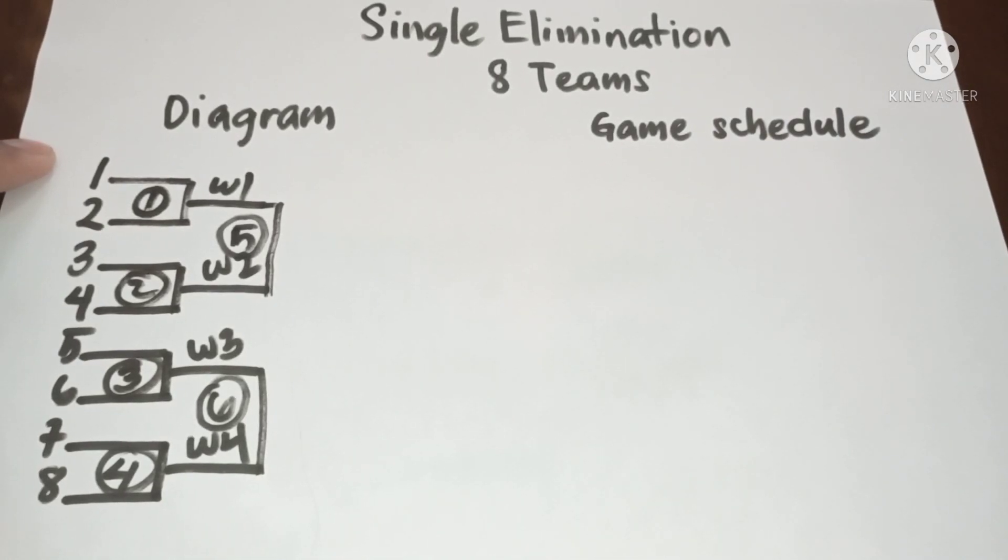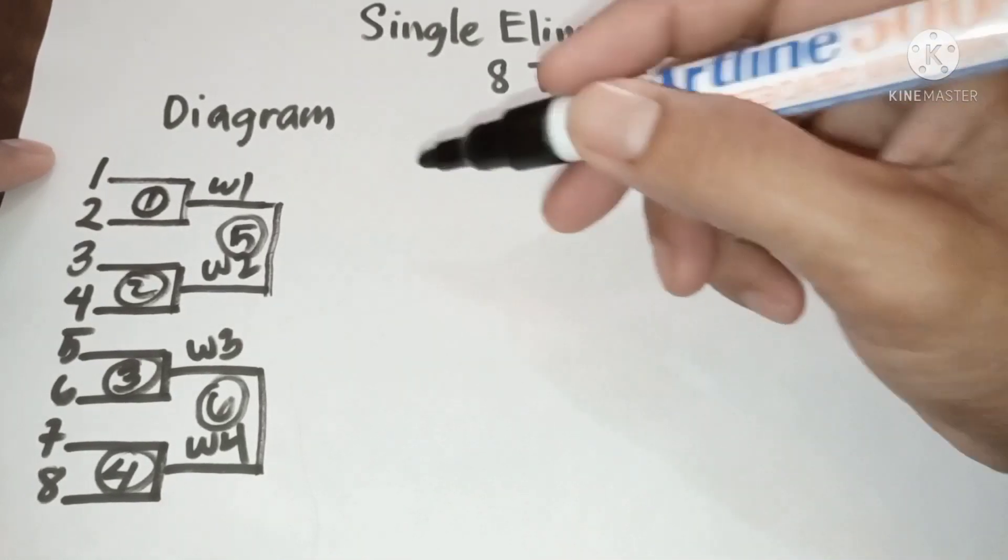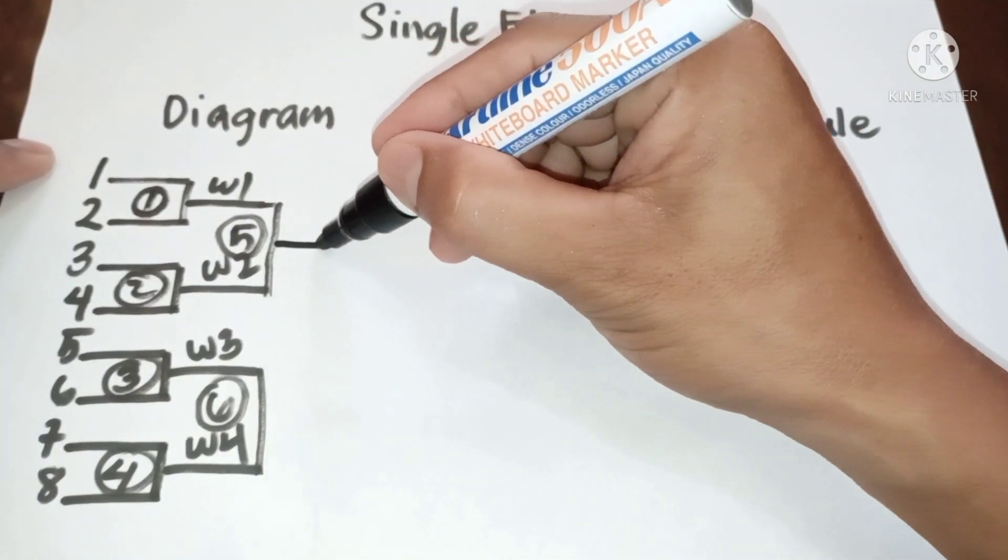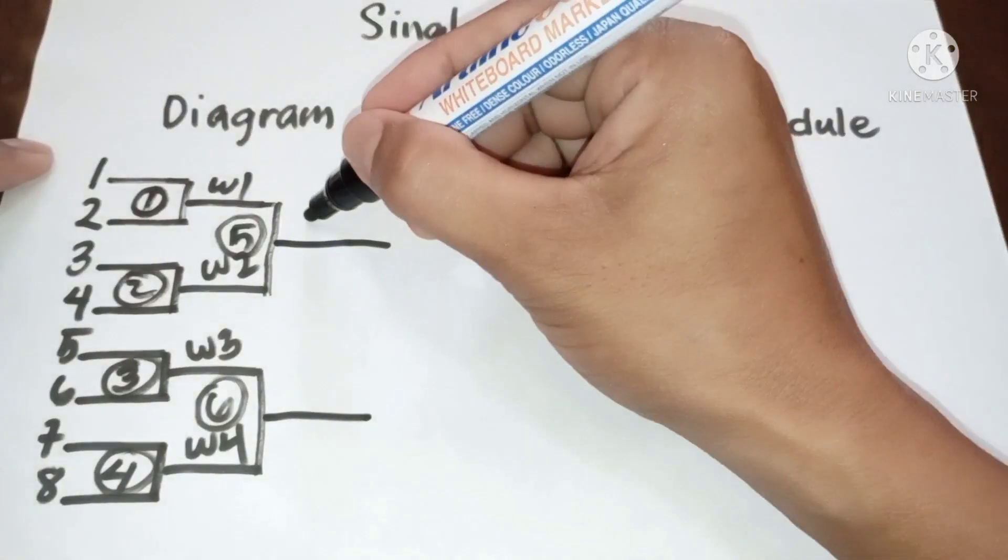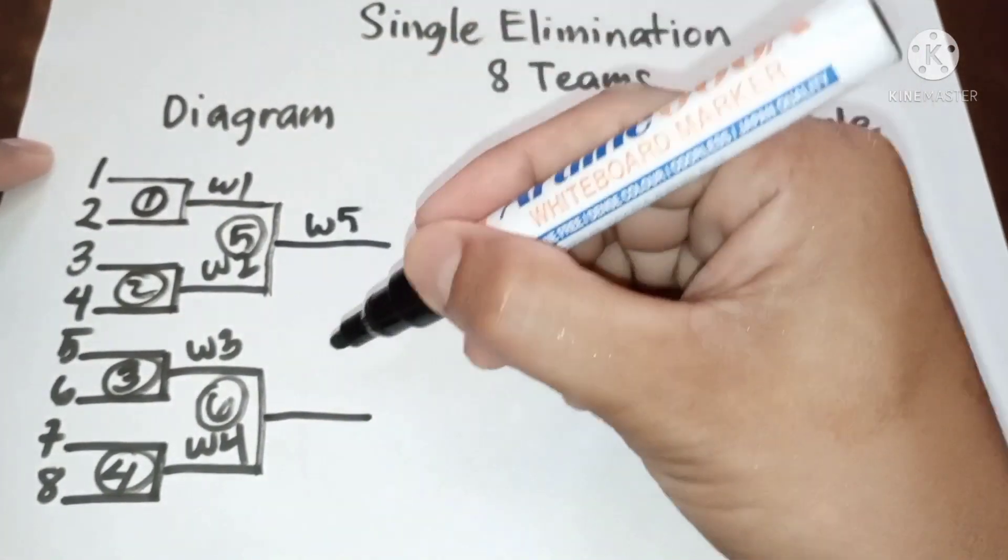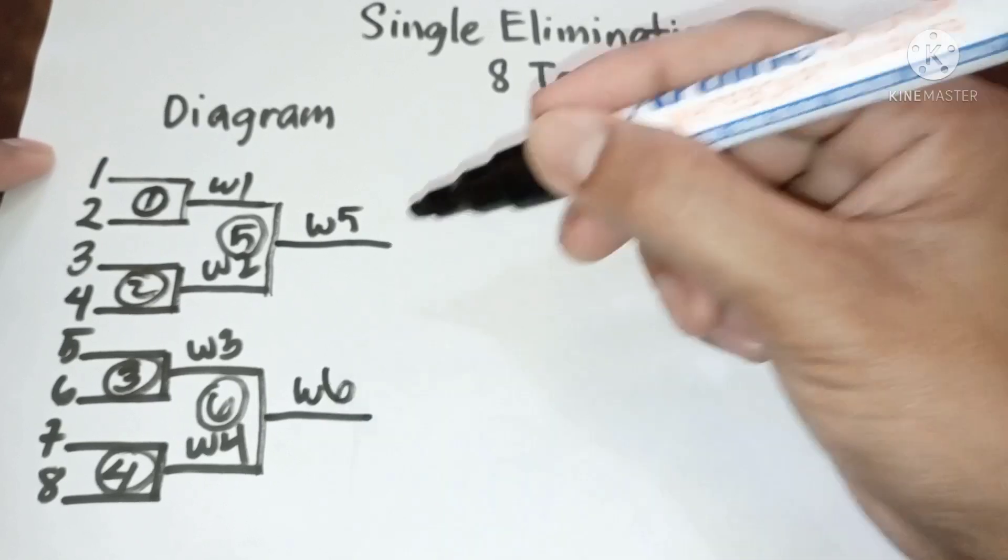Now let us have the result. So winner five, winner six.